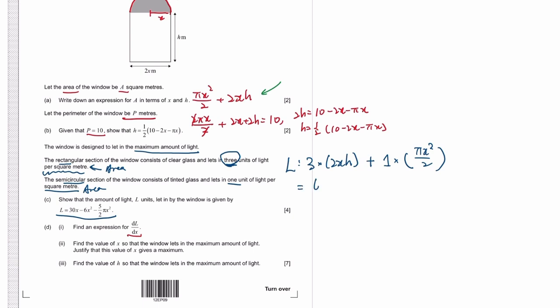So this is what, 6xh plus πx² over 2. And then you see the formula they have, they have no h.